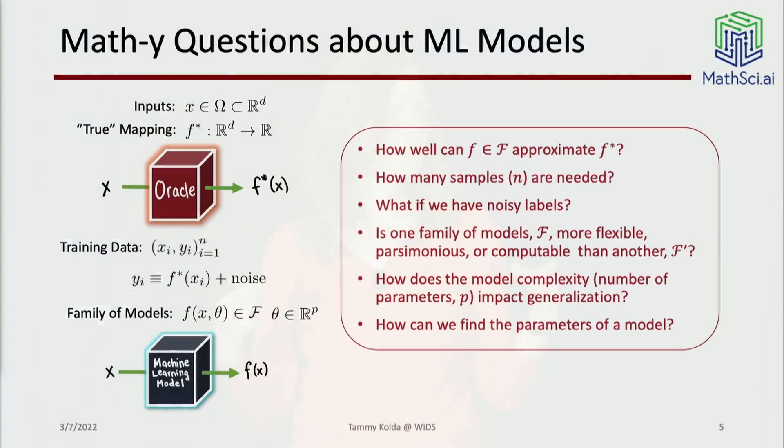Mathematicians like to think a lot about functions and their general properties. What are mathy questions people might ask about machine learning models? We think we have some input in a domain, sub-domain of d-dimensional space. We often assume there's some true mapping, but we just get to see hints of it. Some oracle does actually - the F star is what we're trying to find in our machine learning model. We also get training data.